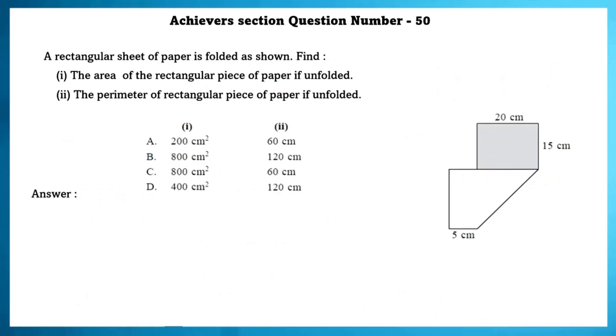Achieve section question number 50. A rectangular sheet of paper is folded as shown. Find the area of the rectangular piece of paper if unfolded. Second one, find the perimeter of the rectangular piece of paper if unfolded. As we can see here, in the bottom one, it is 5 centimetres. So, the above one also is 5 centimetres. The part which is folded near the breadth is also 20 centimetres.